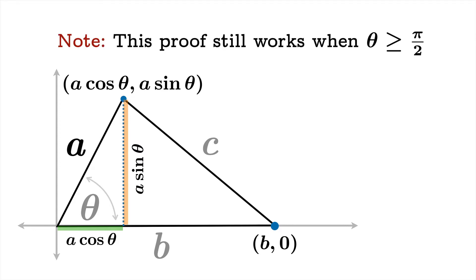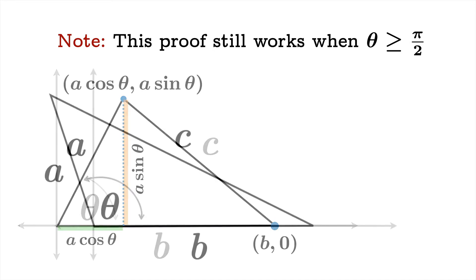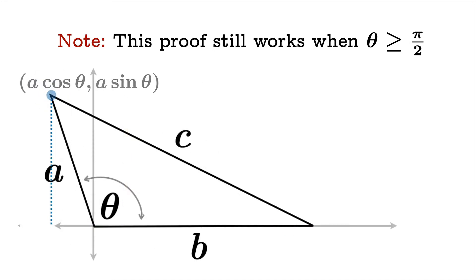We should note that this proof still works when theta is greater than or equal to pi over two. I don't want the proof to depend on theta being acute. If theta had been obtuse, the right triangle trick still works and the coordinates are still (a cosine theta, a sine theta), and the proof proceeds exactly the same way.